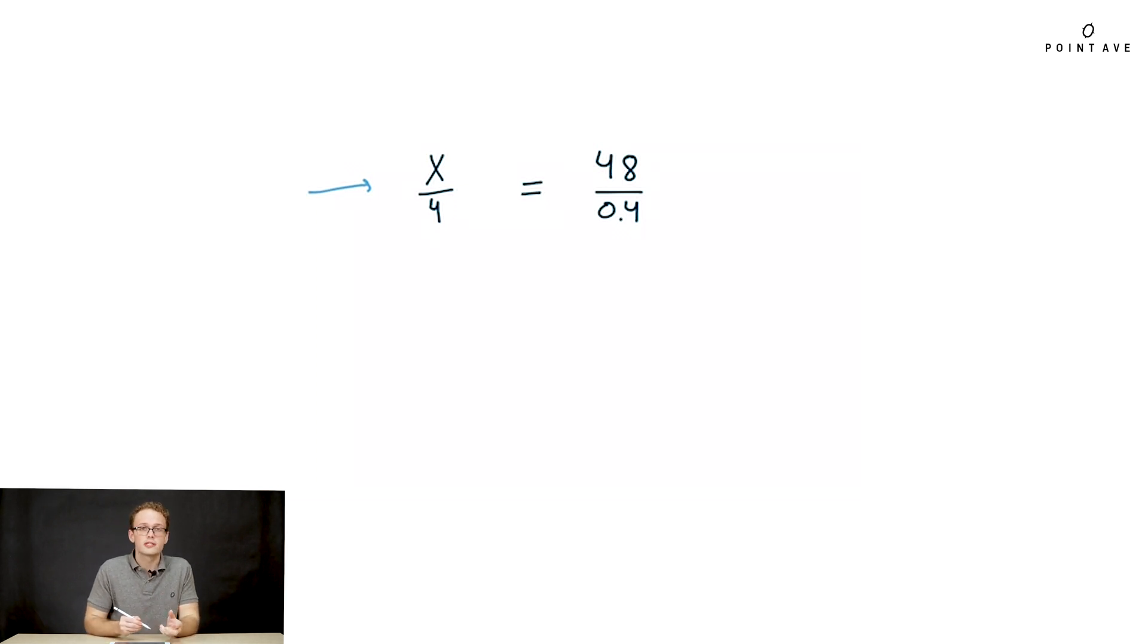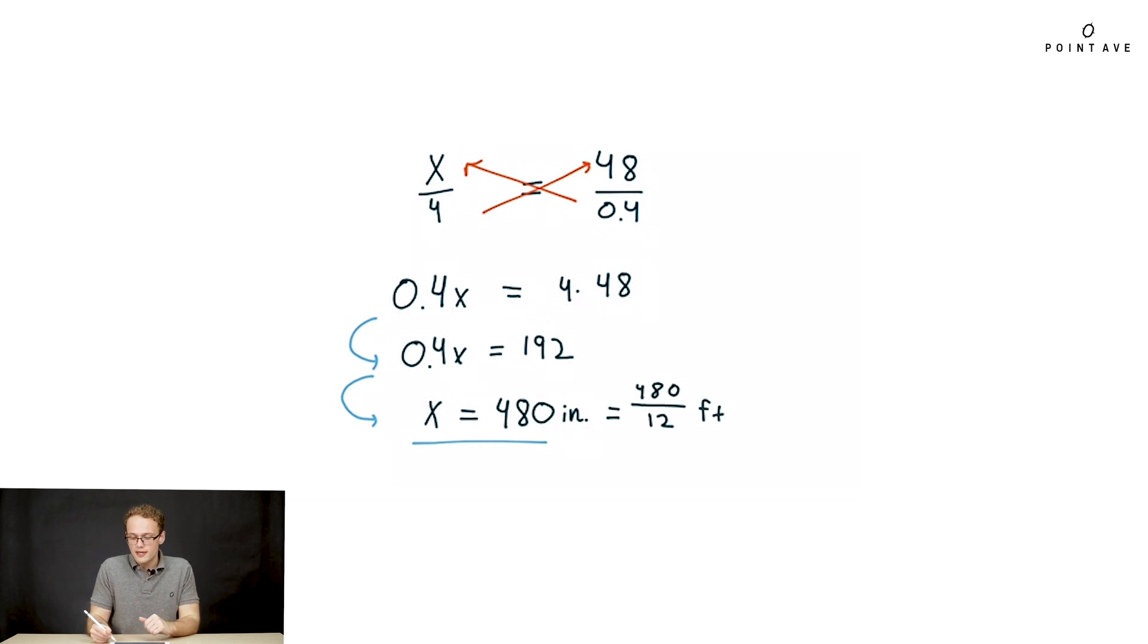So now to solve we simply cross multiply. That gives us the equation 0.4x equals 192. So solving this for x we end up with x equals 480 inches. We're not quite done, we need it in feet so we simply divide by 12 and then we end up with the dinosaur is 40 feet tall. That is a big dinosaur.